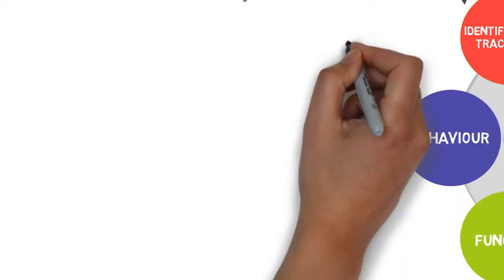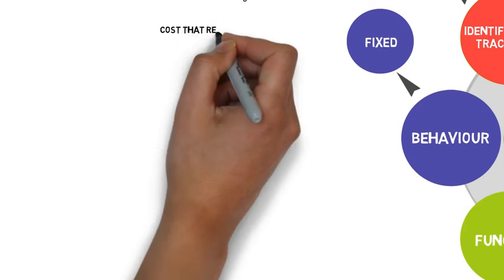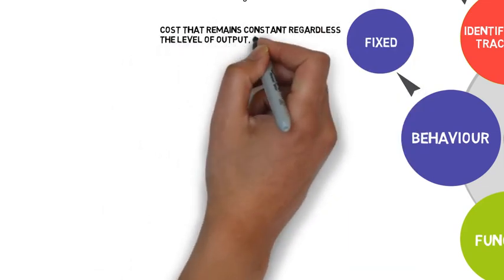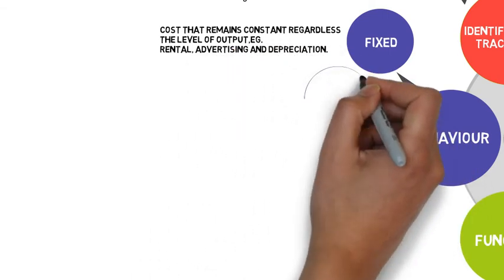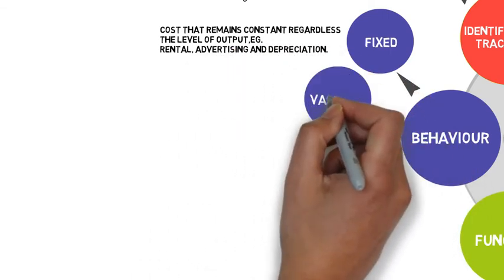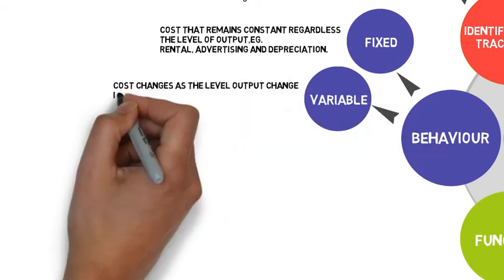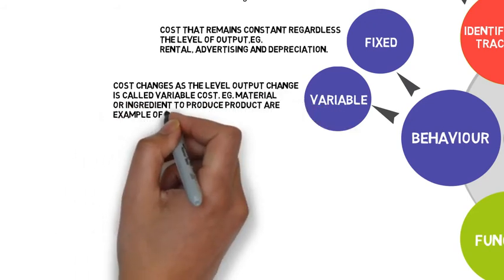Now we head to cost behavior. Cost behavior can be divided into four groups. Fixed cost defined as cost that remains constant regardless the level of output, example is rental, advertising, and depreciation. Cost changes as the level output change is called variable cost. For example, material or ingredient to produce product are example of variable cost.